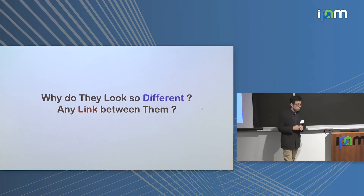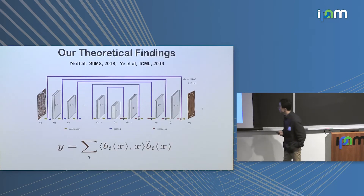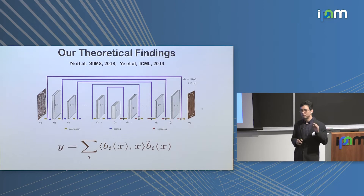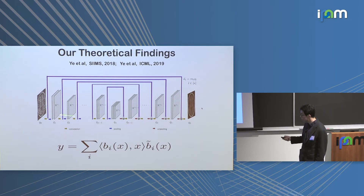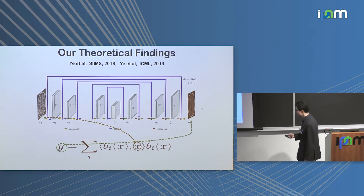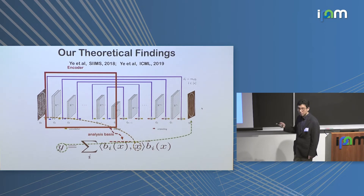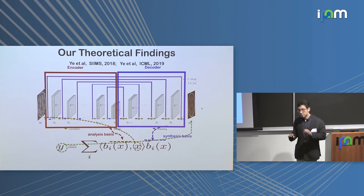Comparing classical approaches to machine learning approaches looks very different — but is there a link between the two? One of the most important contributions of our work is that we found a very important link between these two seemingly different approaches. Consider an encoder-decoder network architecture: the noise image X and clean image Y. The relationship between them can be represented as a frame-like expansion. The encoder part of the neural network generates the analysis frame, and the decoder part generates the synthesis frame — and this is not just a high-level description; we have closed-form expressions for all these spaces.